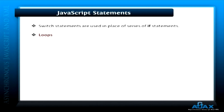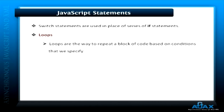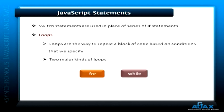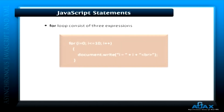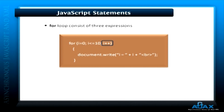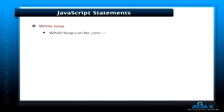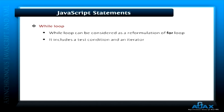Now let's see why we use looping statements. Loops are a way to repeat a block of code based on conditions that we specify. There are two major kinds of loops: for and while. The for loop consists of three expressions: initialization, followed by the condition, and finally the iterator. This loop continues its execution as long as the condition returns true. A while loop can be considered a reformulation of the for loop — it includes a test condition and an iterator, and continues as long as the test condition returns true.